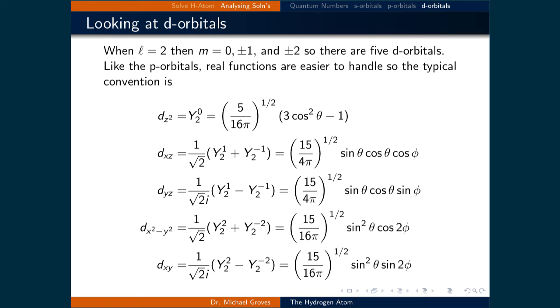Finally, here are the definitions for the d orbitals. These occur when l is equal to 2. Because of the bounds imposed by the fact that a component cannot be greater than the vector itself, m is restricted to being between 0, plus or minus 1, and plus or minus 2. As a result, there are 5 d orbitals.